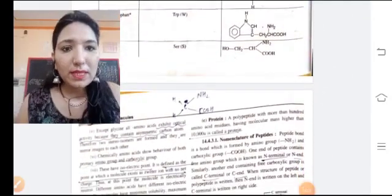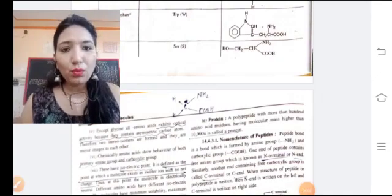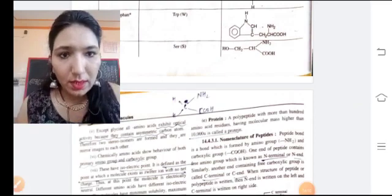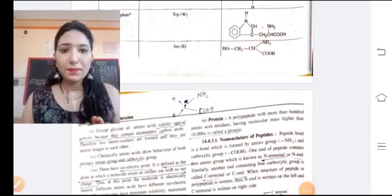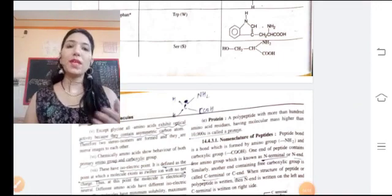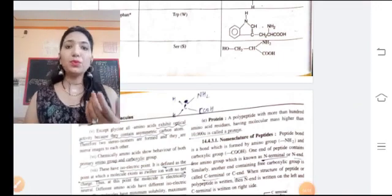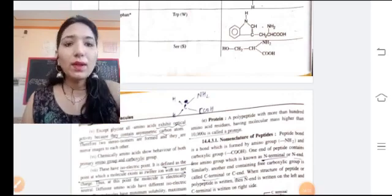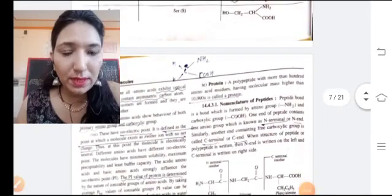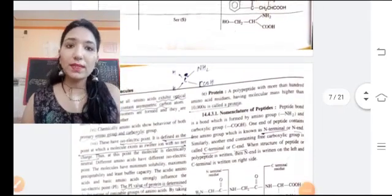Chemically, amino acids show behavior of both primary amino acids and carboxylic groups. The amino acids can be used as chemical acid, and also used as basic, due to the presence of carboxylic group and amino group.